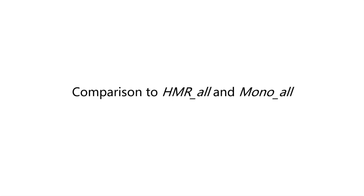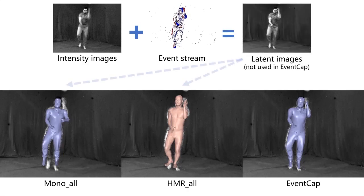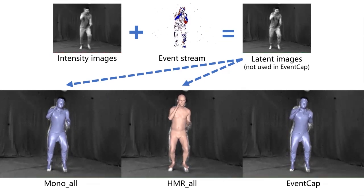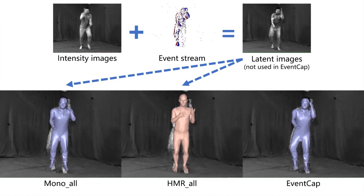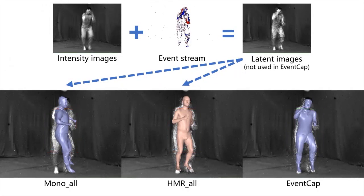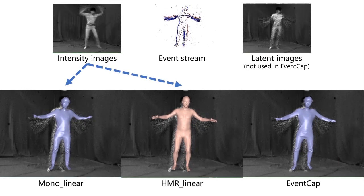We compare our approach to previous work. Here, we compare to existing monocular image-based methods, HMR and MONO-PURF CAP. For fair comparison, we apply these methods on the 1000fps latent images reconstructed from the event stream. Note that both previous methods suffer from jitter and inferior tracking results, due to the accumulated errors of latent images. We further apply MONO-PURF CAP and HMR only on the low frame rate intensity images, and then linearly upsample the skeleton poses to 1000fps.